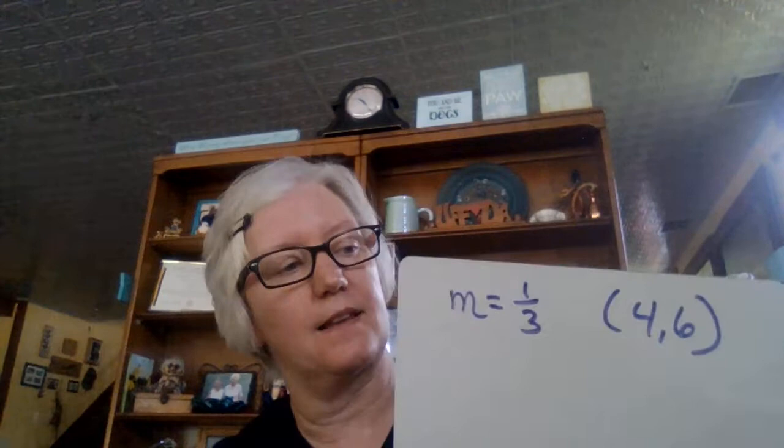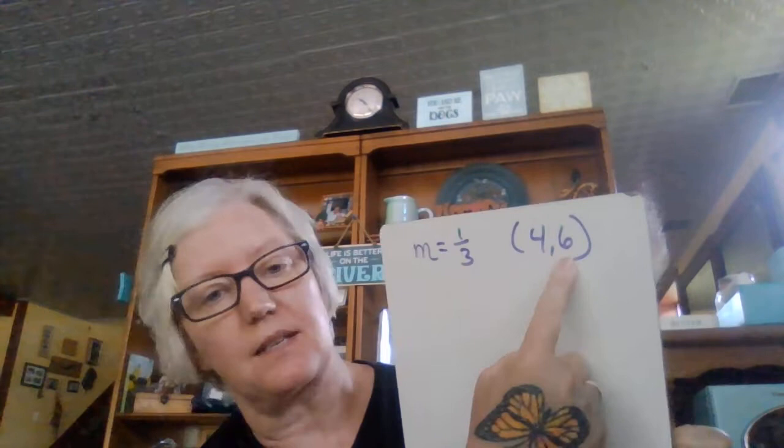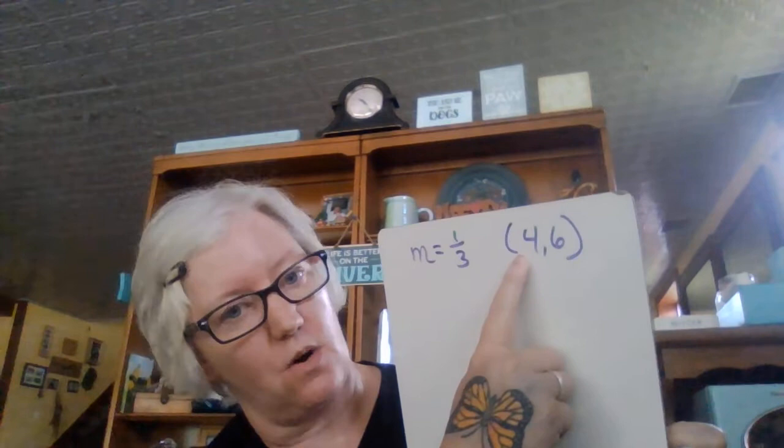Now, sometimes kids get so used to having to do all that work that they don't realize that what if I just gave you the slope and one point? So, what a lot of students want to do is they want to equate the y value with the y-intercept. I see this all the time. They'll say y equals 1/3x plus 6. No, that is not the y-intercept. And the reason that's not the y-intercept is because that's not 0. If the x value is not 0, then that's not the y-intercept. That's just the y value of one of the points.